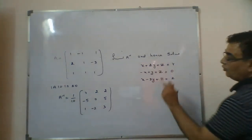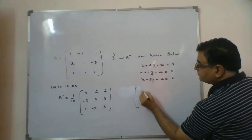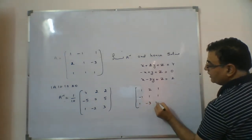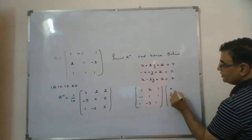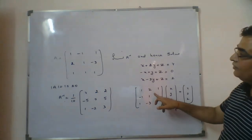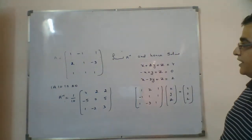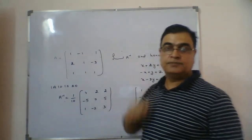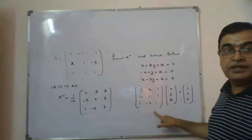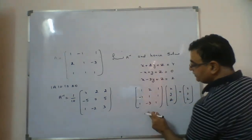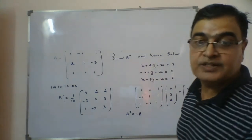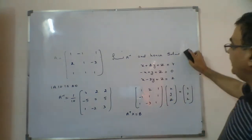Now we want to solve the system. What is the difference between this question and the previous one? Writing the coefficient matrix: row 1: 1, 2, 1; row 2: -1, 1, 1; row 3: 1, -3, 1, multiplied by x, y, z equals B = 4, 0, 2. Check this coefficient matrix carefully — first row of this matrix equals the first column of A, second row equals second column of A. So this is not A — it is A transpose! Therefore we write A transpose · x = B, not A · x = B.